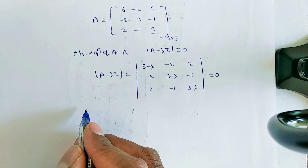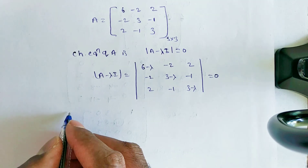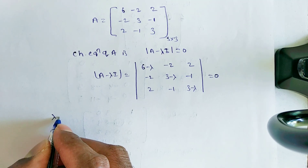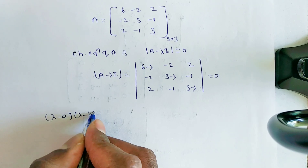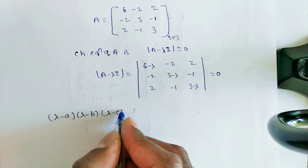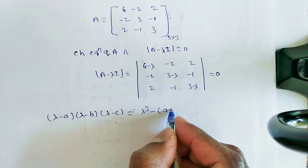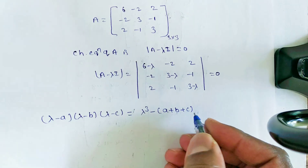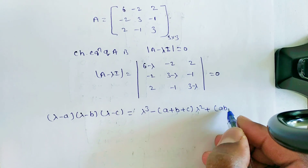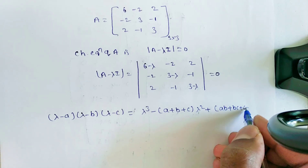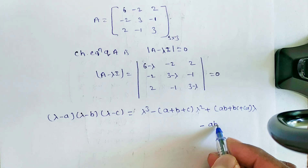If A, B, C are the 3 roots, you can write: (λ - A)(λ - B)(λ - C) = λ³ - (A+B+C)λ² + (AB+BC+CA)λ - ABC.